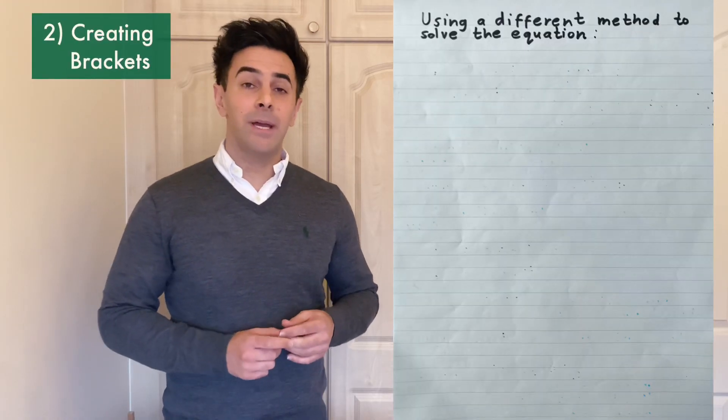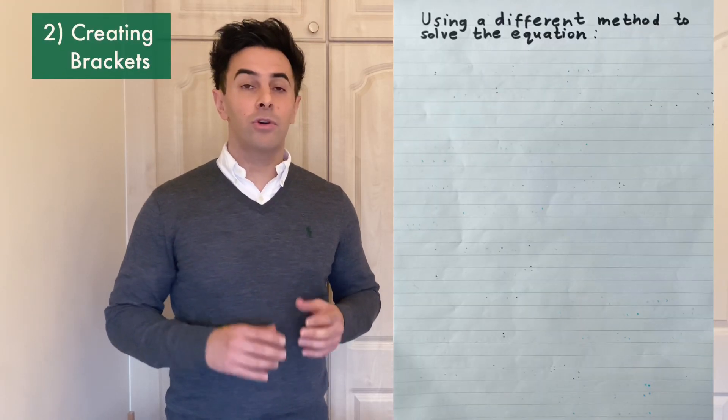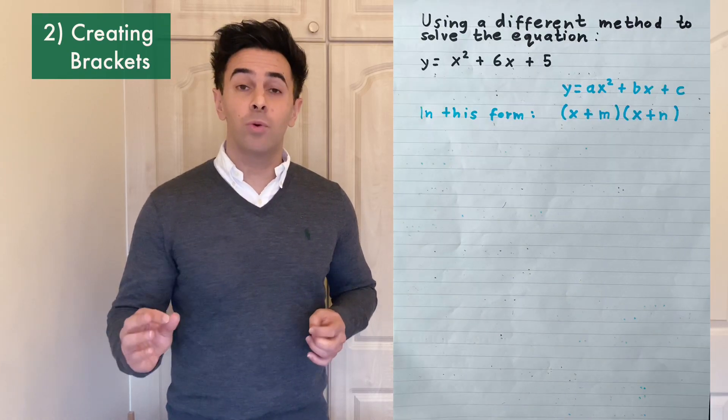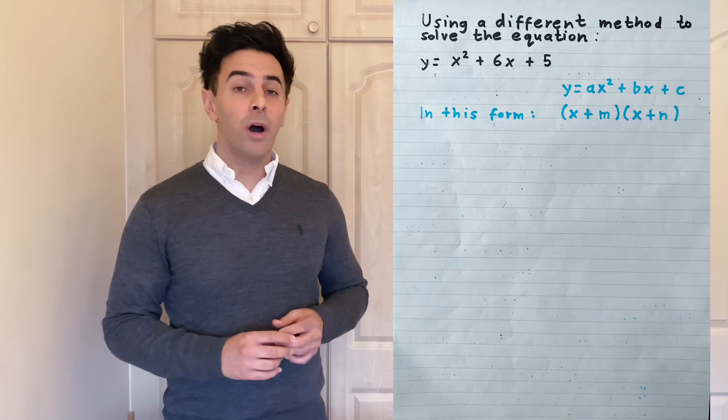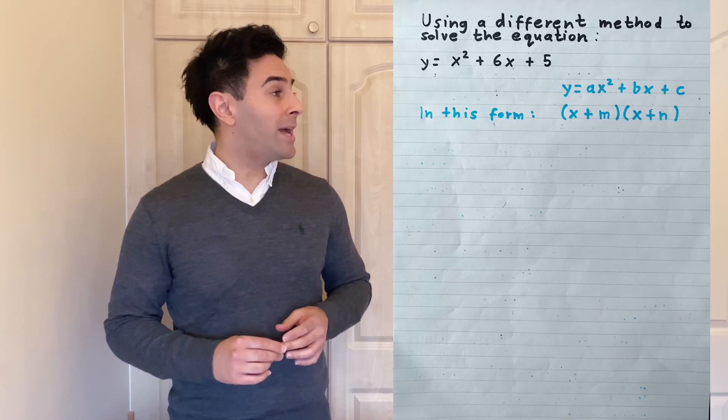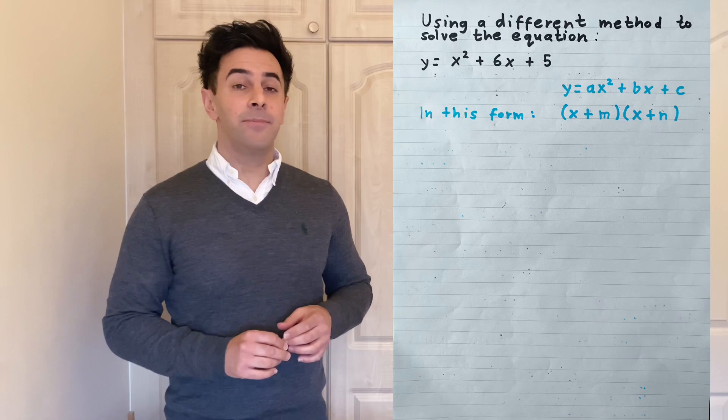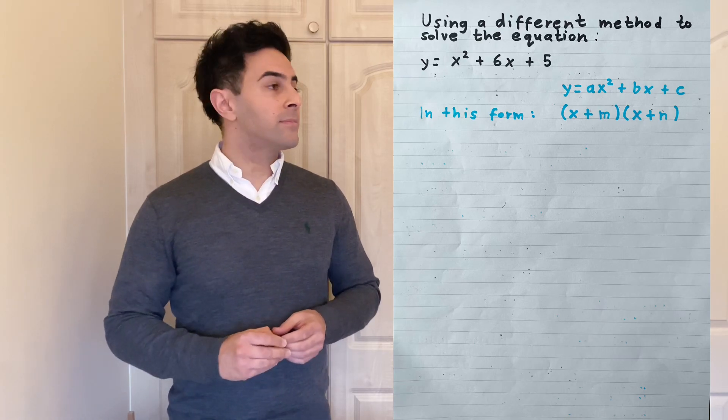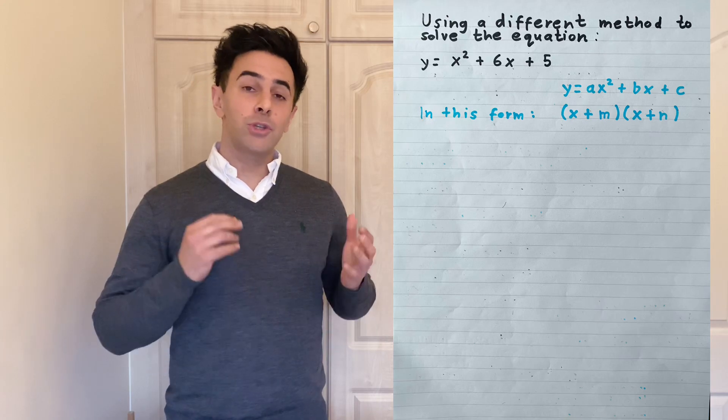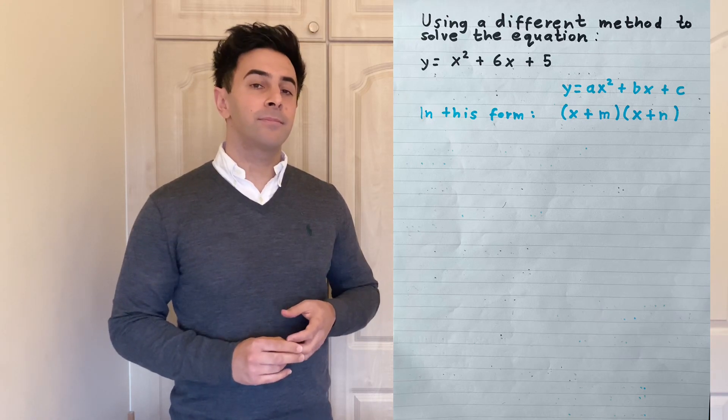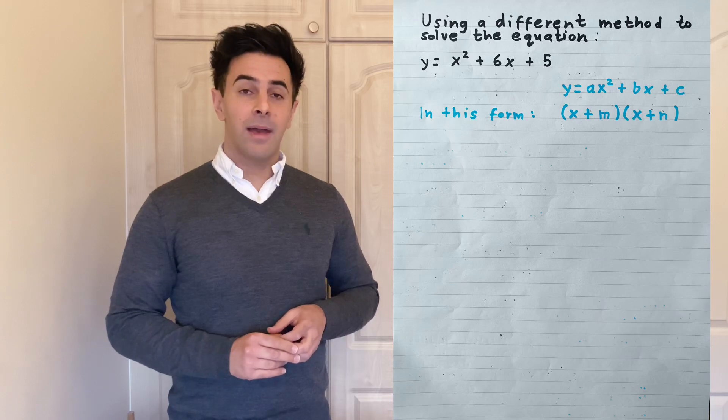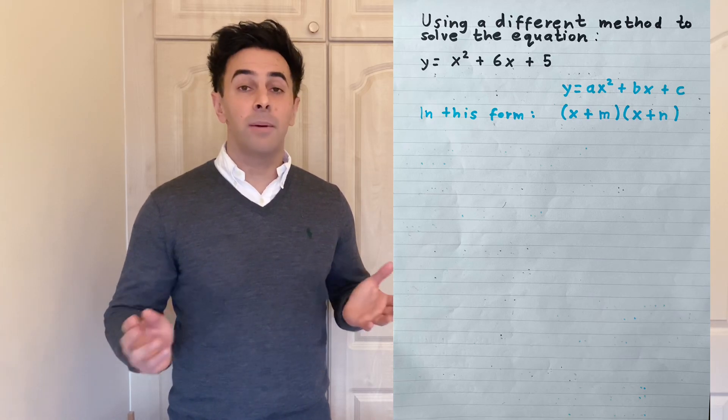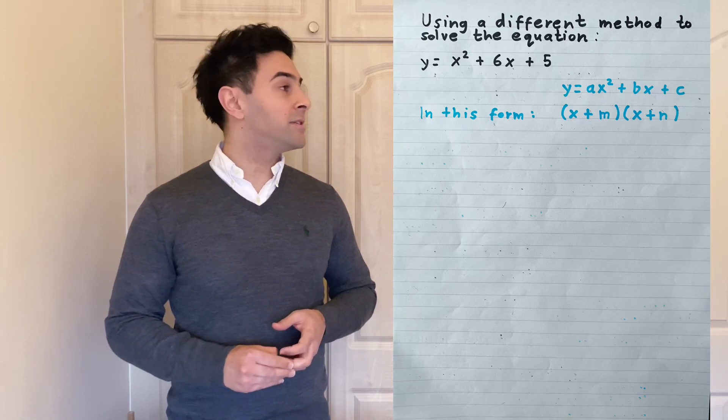Now let's use a different method to solve this equation. We'll create a pair of brackets. Now for this purpose let's look at the original quadratic equation in its classic form. That's y equals ax squared plus bx plus c. For this example just assume that a is equal to 1. If we look at the two brackets that we have here we have x plus m and x plus n, where m and n are two numbers for the sake of this example.